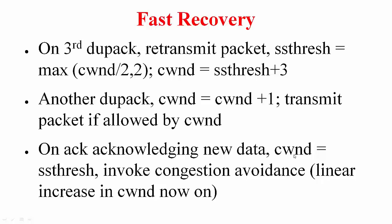The other mechanism TCP Reno employs is fast recovery, to avoid the pipe getting empty. Suppose you are entitled to a window size of 25. The sender doesn't know about this, so it starts with slow start: it will start with 1, increase to 2, 4, 8, 16, and then 32.